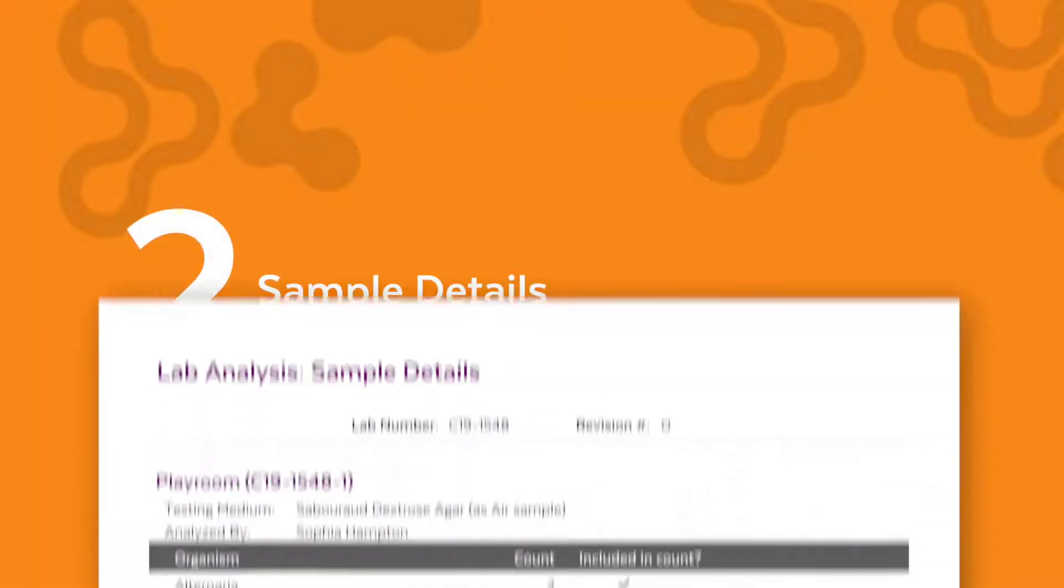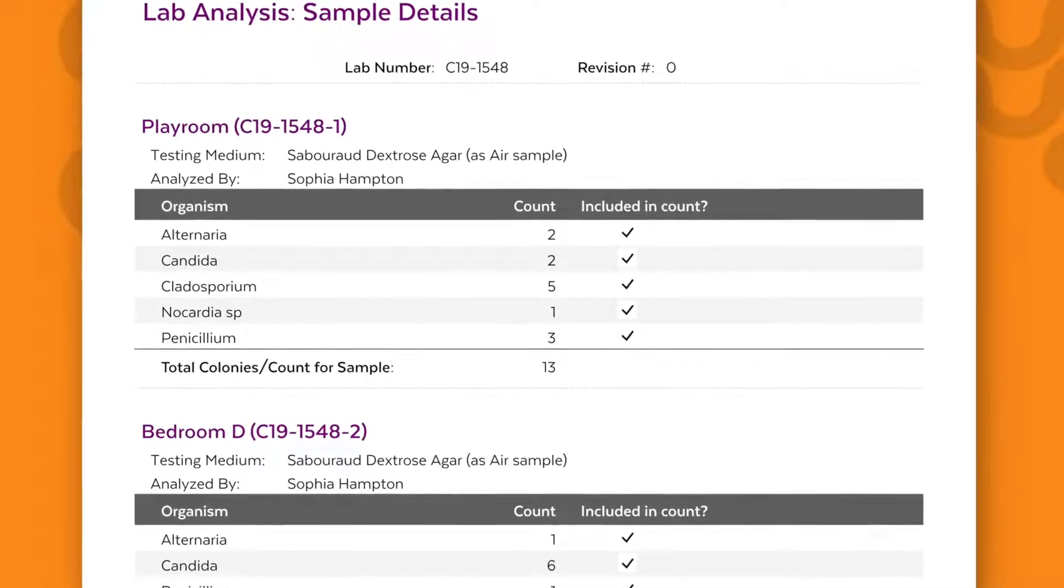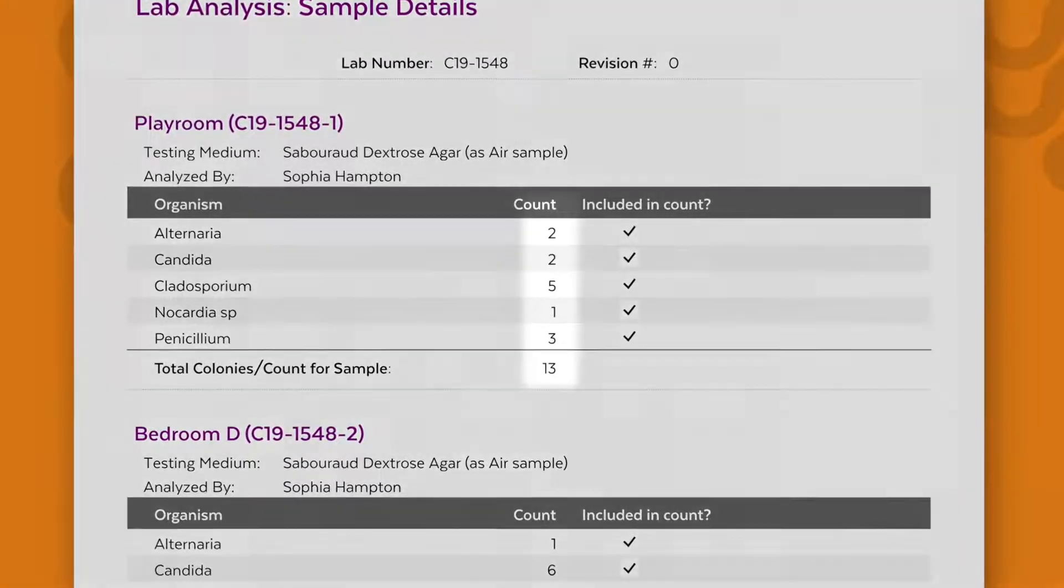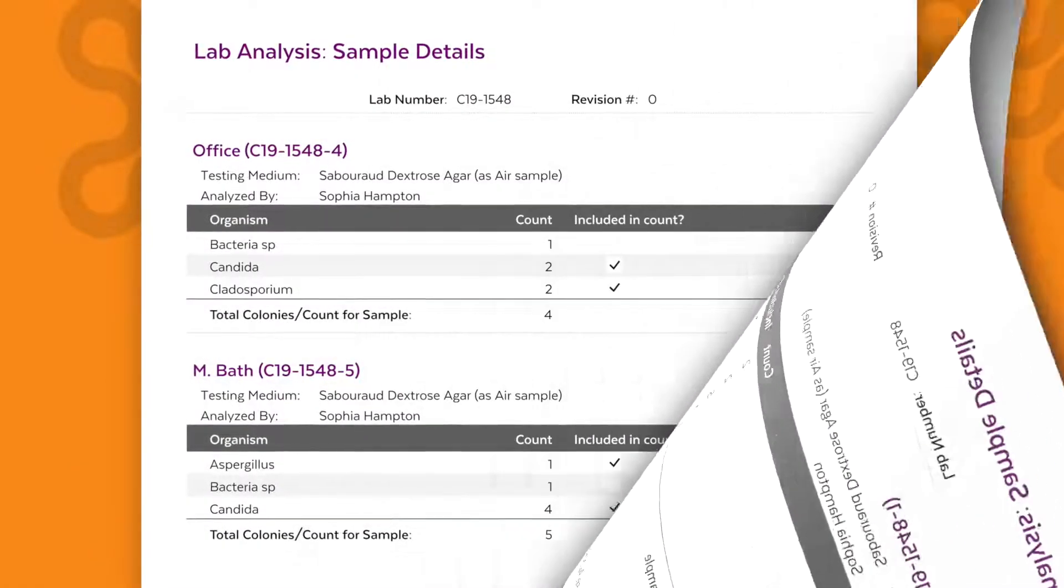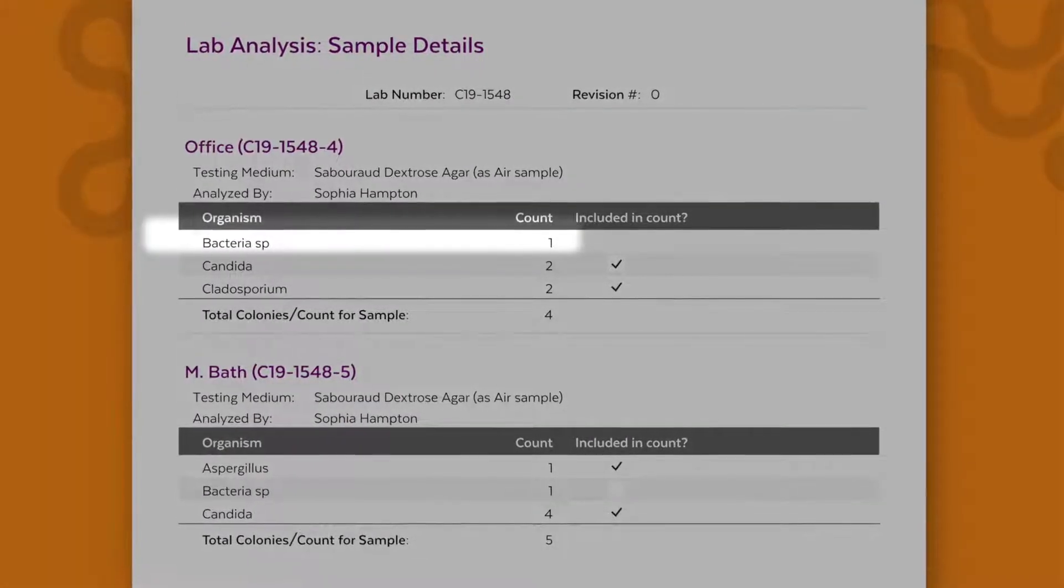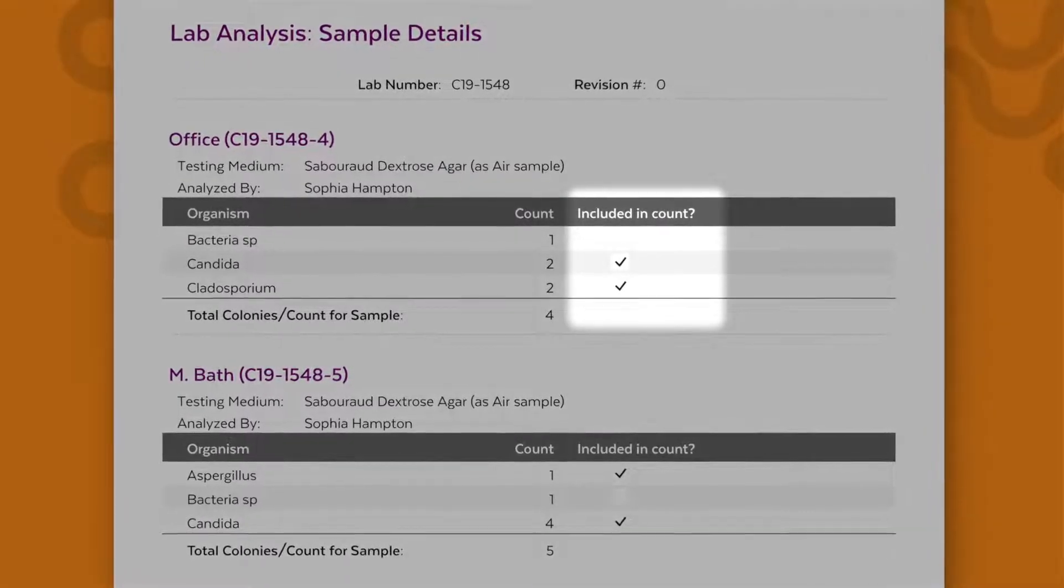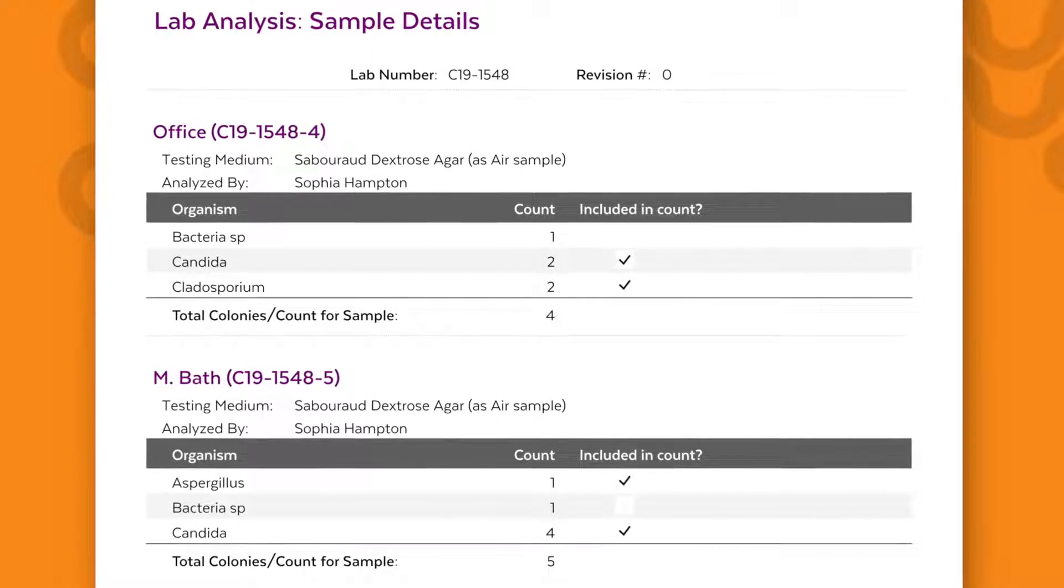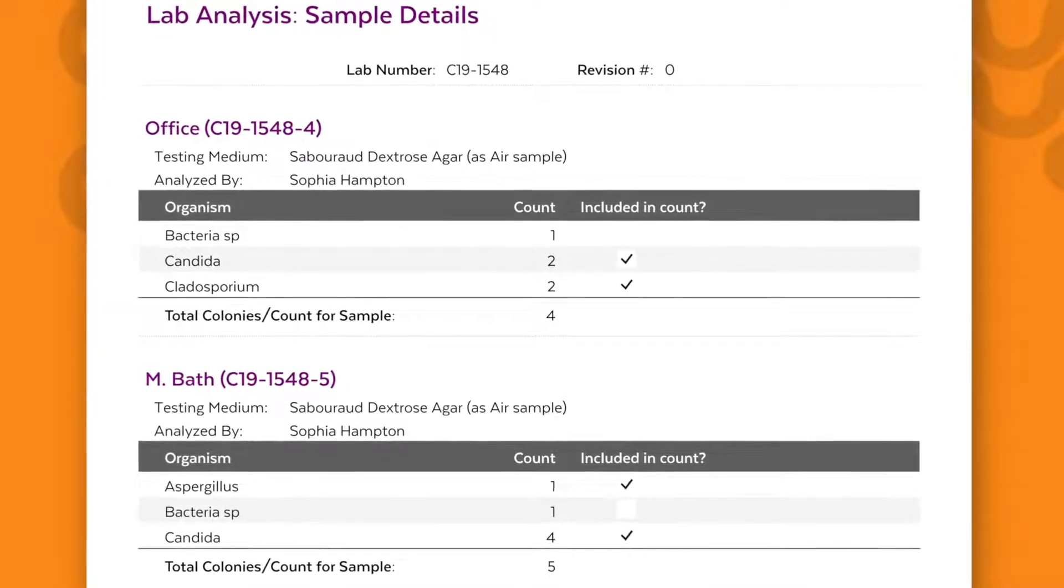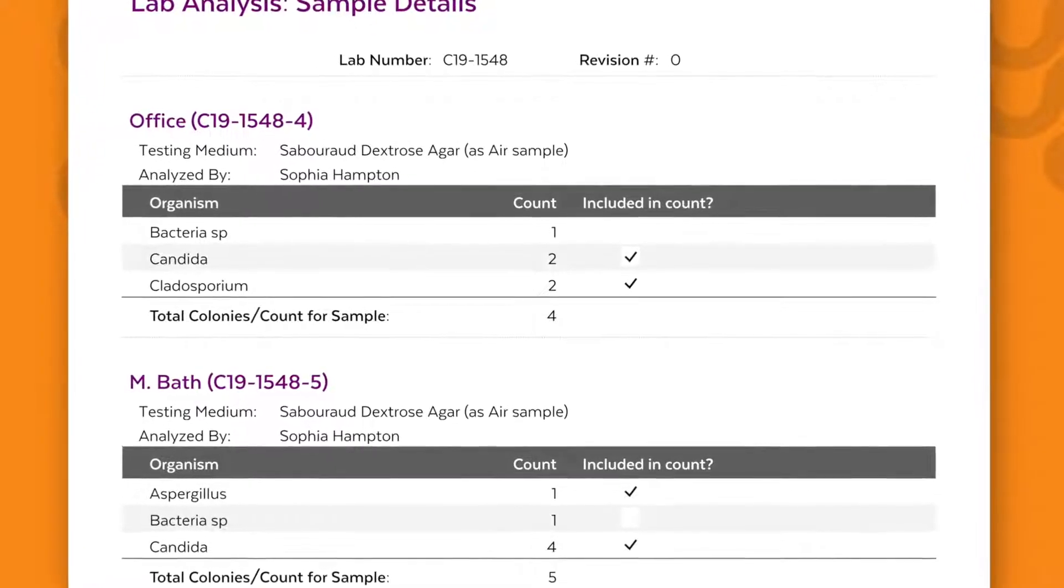On the next page or pages each of your samples are listed out with the genera of mold that was found as well as how many colonies of each genera was present on your plates. We do note if bacteria was found on any of your samples however we do not include that number with the total mold count. This is noteworthy because the plates that we use actually deter bacteria growth, so the presence of bacteria is an additional indication of the biological condition of the sampled area.